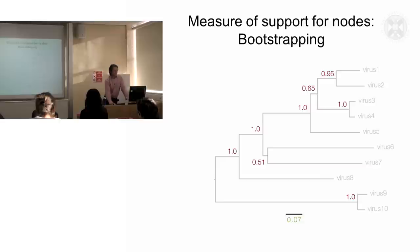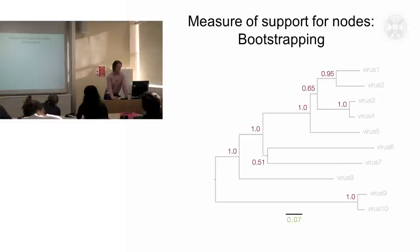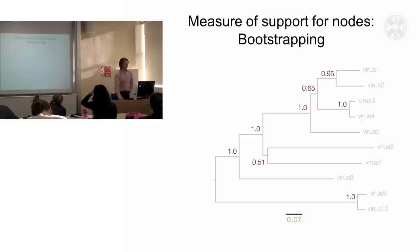So for bootstrapping, essentially, that allows us to get a prediction on the level of confidence. So one is a very high level of confidence in the positioning of that node and the topology of the tree. This is a slightly lower level of confidence associated with it, and this is even lower again. This is more likely to happen by chance than it is by the actual real topology of the tree and the real relationship of the virus sequences.